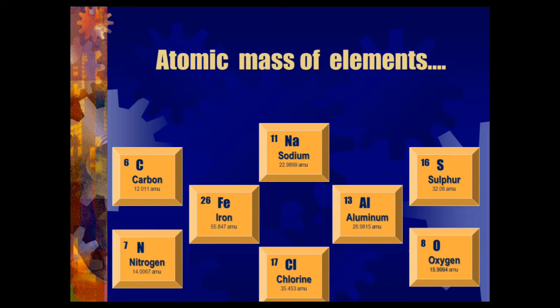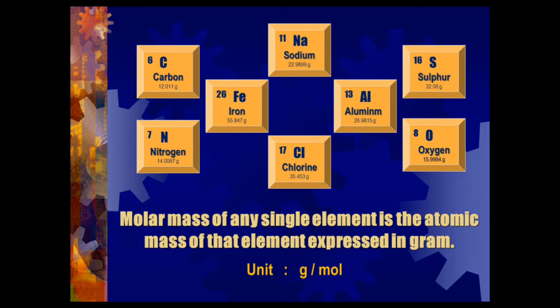Now, considering the mole: molar mass of any single element is the atomic mass of that element expressed in grams — we replace AMU with grams. Therefore: Carbon molar mass 12 g, Nitrogen 14 g, Iron 56 g, Sodium 23 g, Chlorine 35.5 g, Aluminium 27 g, Sulfur 32 g, Oxygen 16 g. Unit of molar mass is grams per mole instead of AMU.